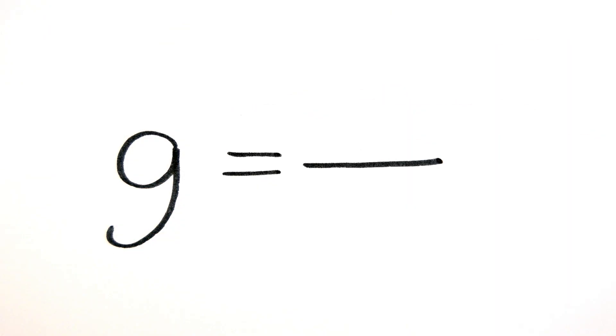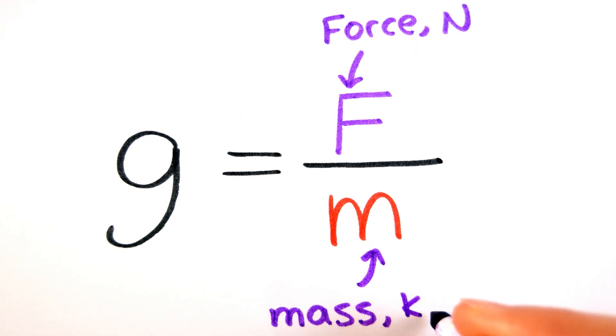The gravitational field strength is the force per unit mass at a point in a gravitational field. For a uniform field, the equation is g equals F over m, where F is the force experienced by the body and m is the mass of the body.